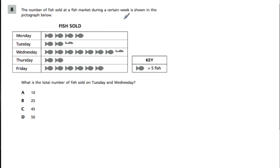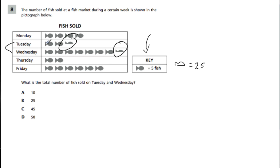Here's a pictograph where one fish symbol equals 5 fish. Often they should note that a half fish equals 2.5, but they don't, so we estimate. For the total fish sold Tuesday and Wednesday, I'll combine the two half-fish symbols to make a whole. Counting by fives: 5, 10, 15, 25, 35, 45, 50. That's our answer.